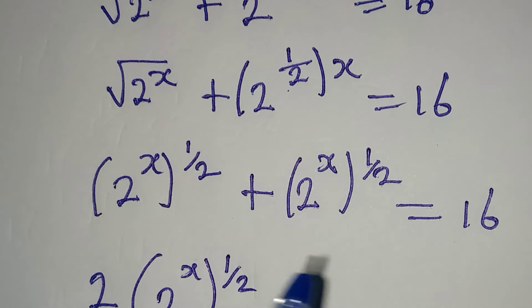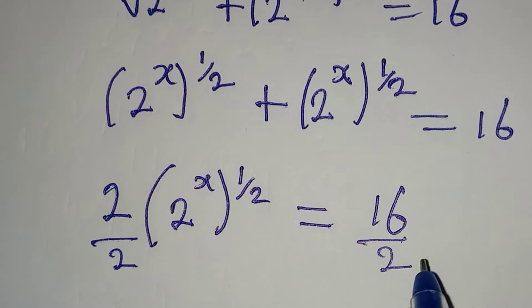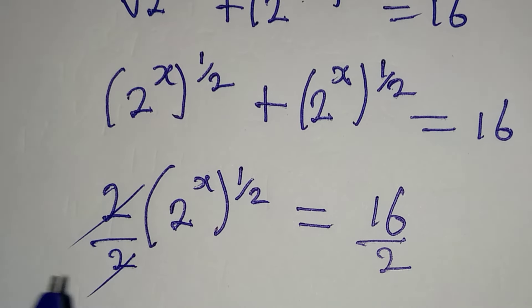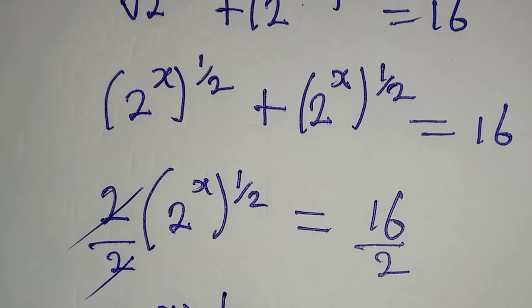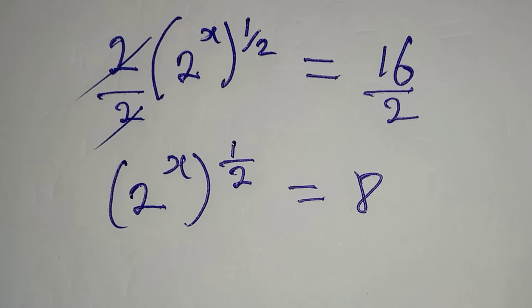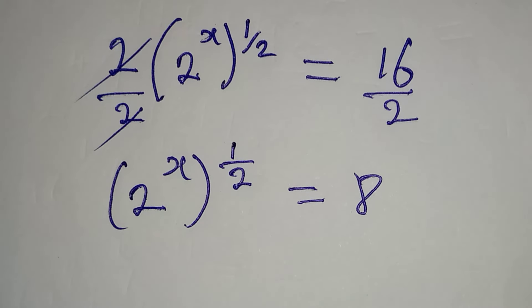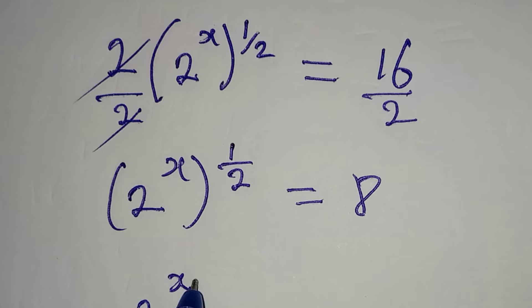Then plus here, I'll pick 2 to the power of x, then this power of 1 over 2 will go out — still the same thing — and this is equal to 16. Now, what do we do? We now have 2 to the power of x to the power of 1 over 2 in two places. This means that we have 2 of 2 to the power of x to the power of 1 over 2. They are the same thing, and if we add both of them, this is what we have, and this will be equal to 16.